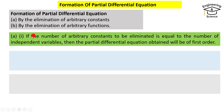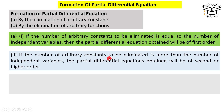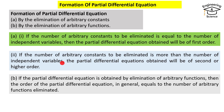For arbitrary constants, if the number of arbitrary constants to be eliminated is equal to the number of independent variables, then the partial differential equation we obtain will be of first order. But if the number of arbitrary constants to be eliminated is more than the number of independent variables, then the partial differential equation may be of second or higher order.